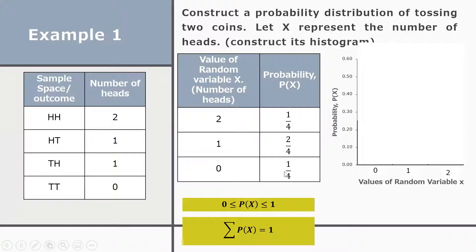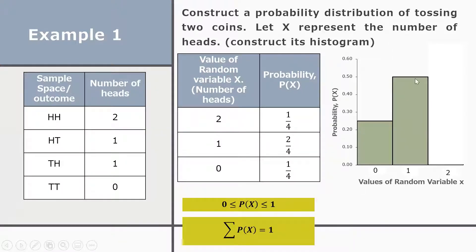For x = 0, the probability is 1/4 or 0.25, which falls between 0.20 and 0.30. For x = 1, the probability is 2/4 or 0.5. For x = 2, the probability is 1/4 or 0.25. This completes the histogram.